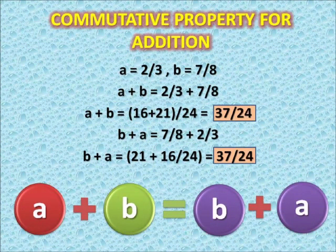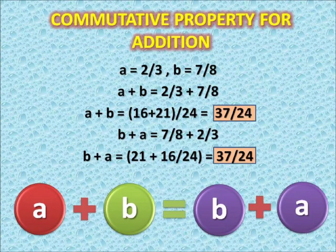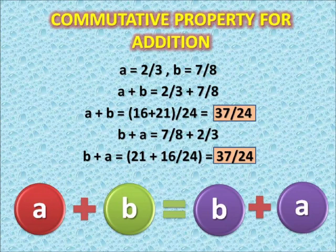Let us start with commutative property for addition. Consider rational number a equals to 2 by 3 and rational number b equals to 7 by 8. Calculating a plus b: 2 by 3 plus 7 by 8 equals 21 plus 16 by 24. Now calculating b plus a: 7 by 8 plus 2 by 3 equals 21 plus 16 by 24, which gives us 37 by 24.